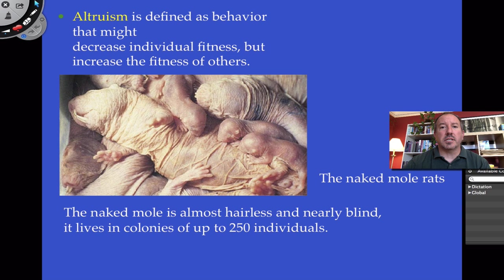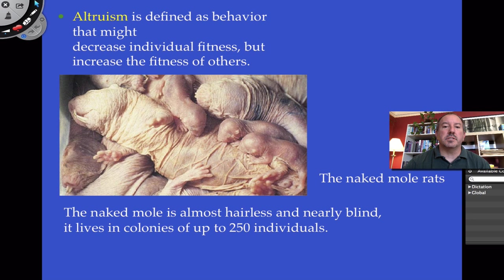One of the classic examples of altruistic behavior — found in most biology textbooks — is the naked mole rat. The definition is a decrease in your own fitness but an increase in the fitness of others. These moles live in burrows, usually in the southern and southeastern part of Africa, in colonies of a couple hundred. They don't really need a lot of fur because they're underground, and they have very poor vision — they're almost blind. There's one queen, which is the only organism in the whole colony that can bear children.